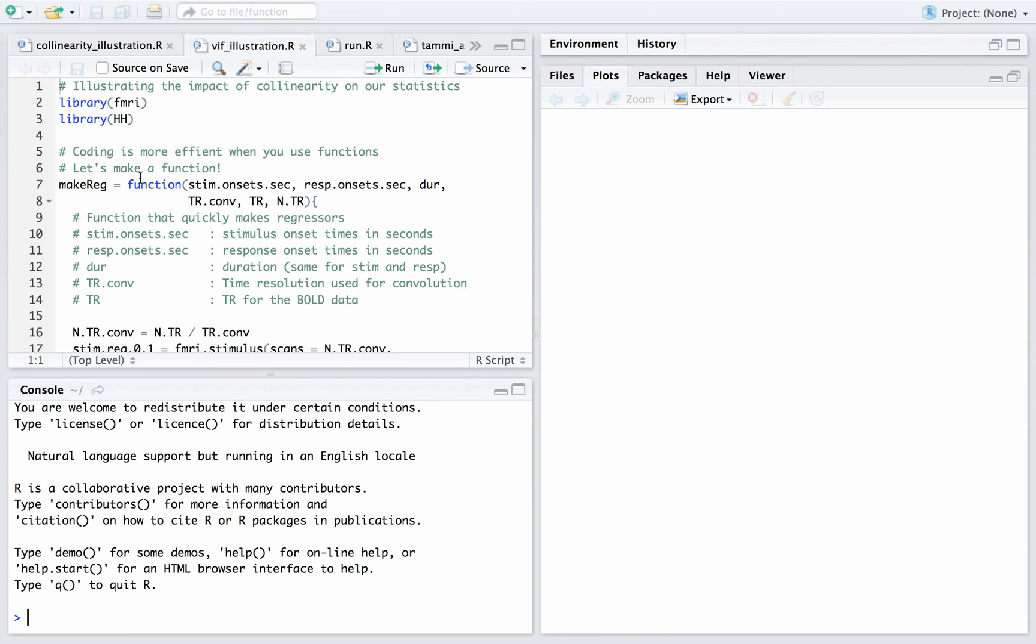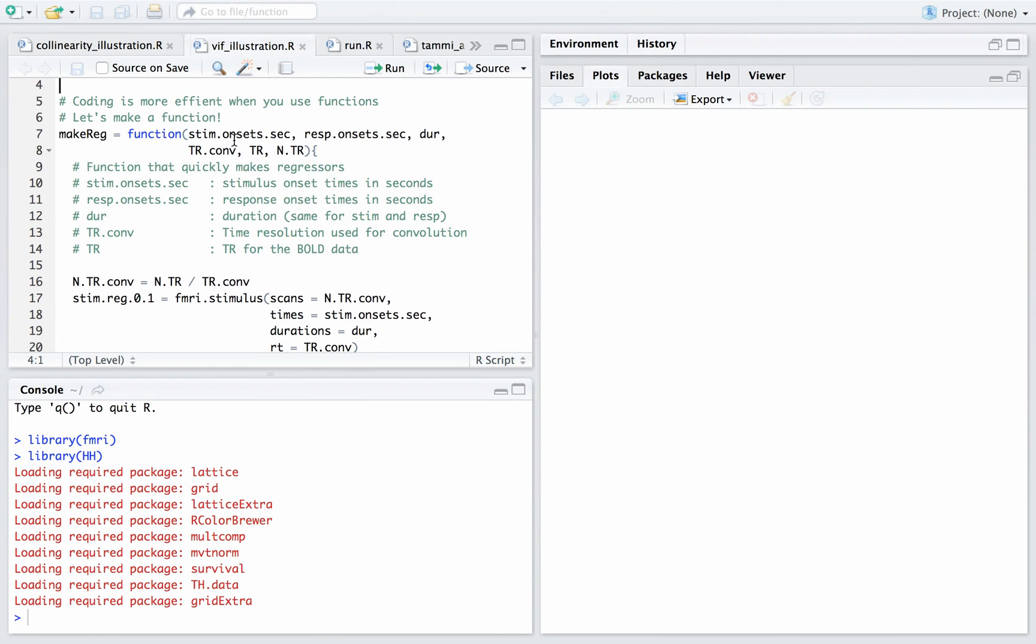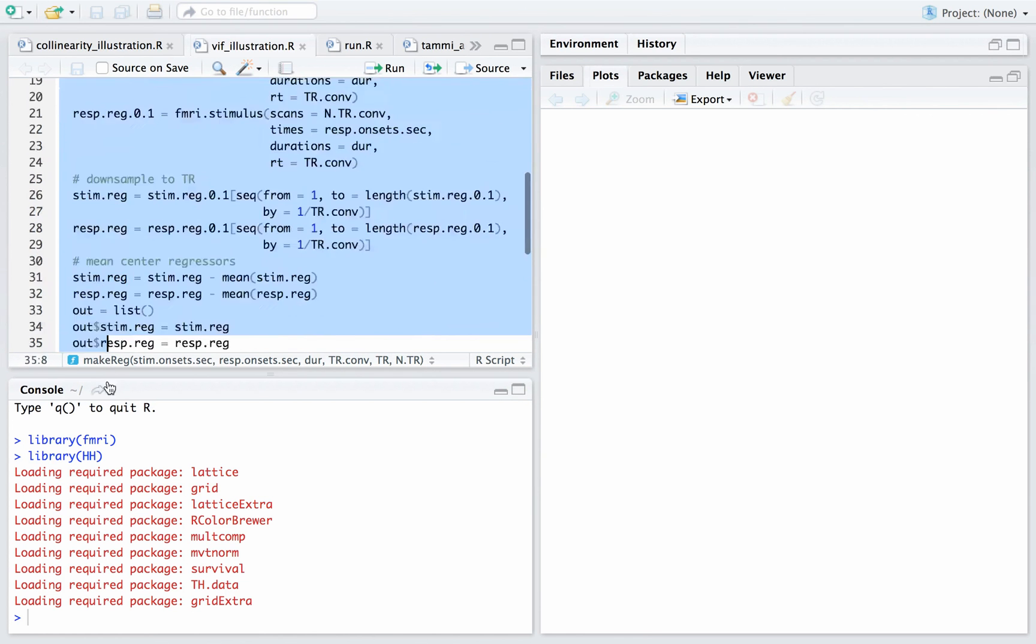So I'm going to show you some quick code. So this is all code we've seen before. I'm going to load the libraries, fMRI, and hh. This make reg function is the function I went over before. It's for this stimulus response setup. So I'm going to have two stimuli, a stimulus, and then very shortly after that, there's always a response. So this is the same setting I've used for all of these collinearity and orthogonalization videos. If you haven't watched them, this may not be as common. So it's just a design where there's a stimulus and then a feedback cue. And if those are very close to each other, you're going to have collinearity. If you space them out, you won't. So this just makes the regressors.